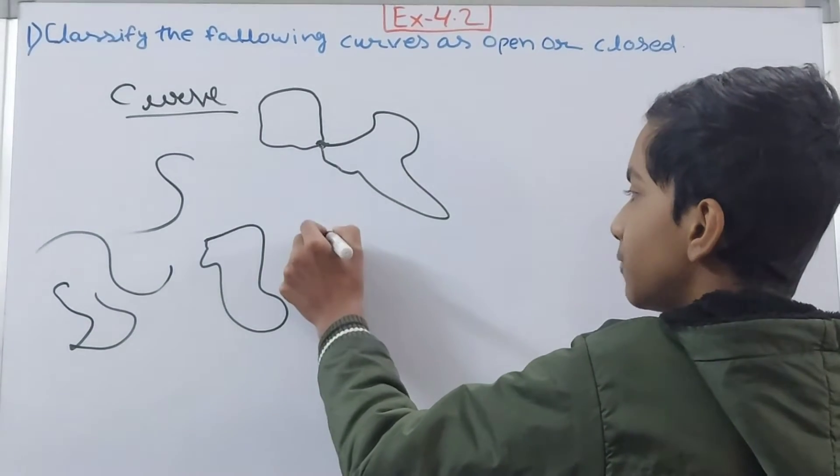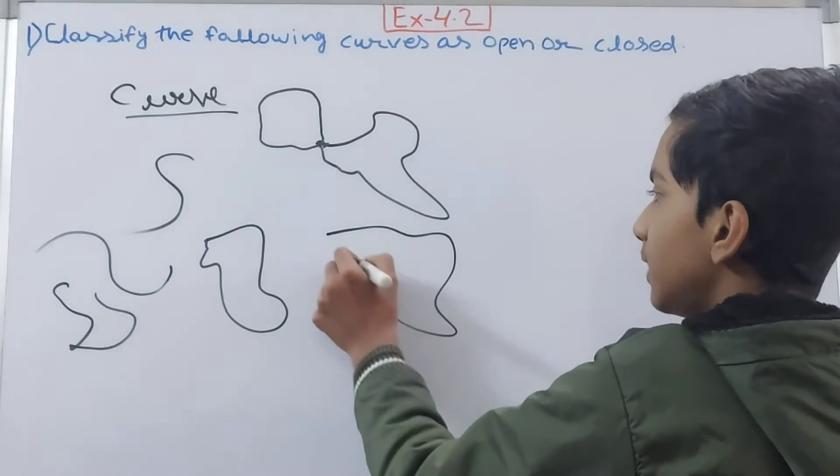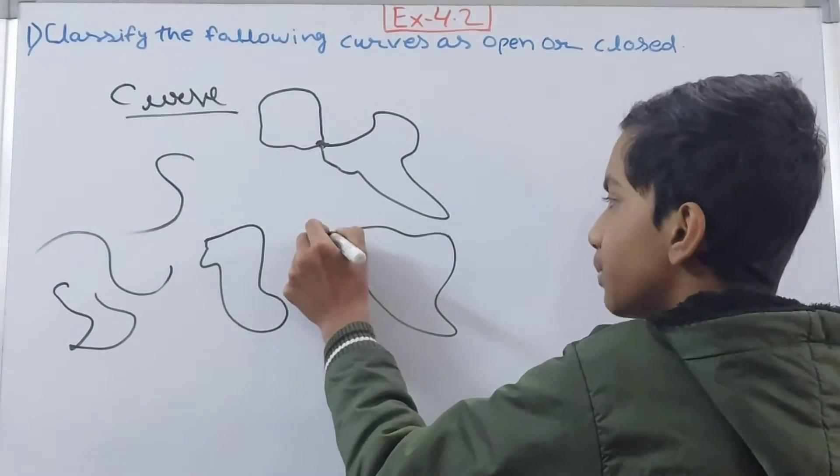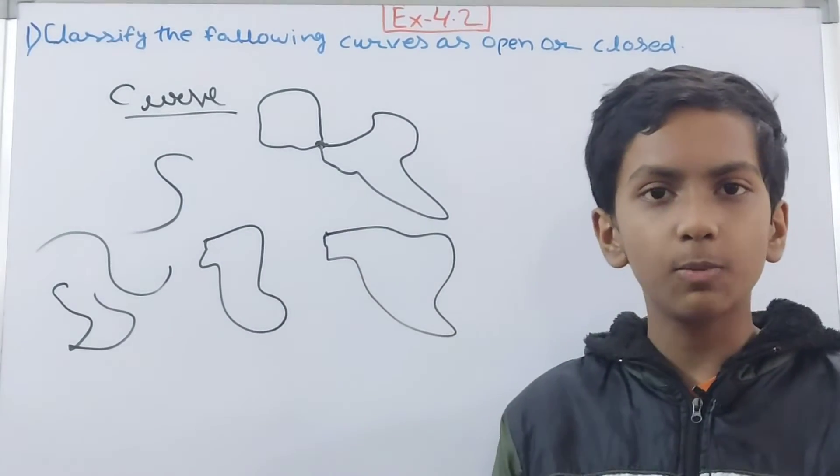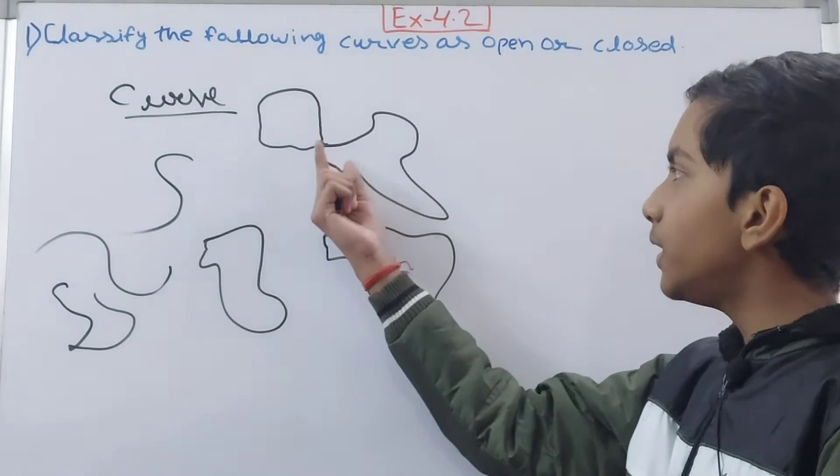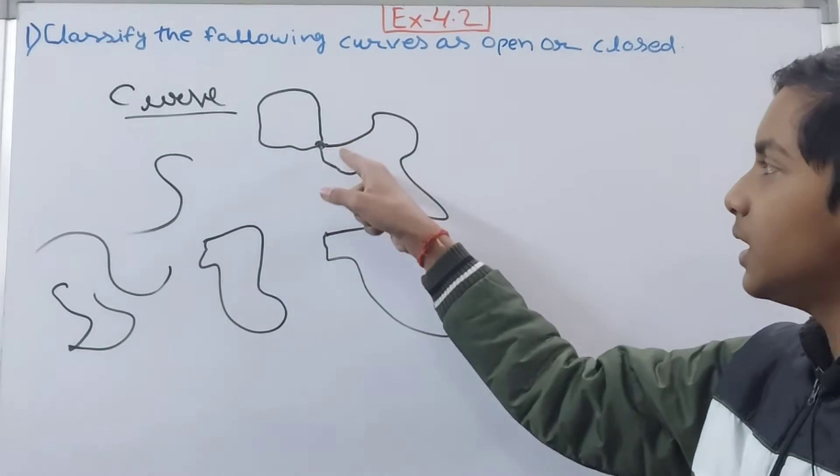Now again, I will do something like this from this point. I will bring it at this point and not move it further from this point. So in this curve you see, we have taken it away from the path.